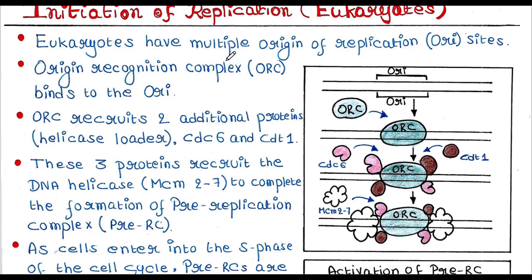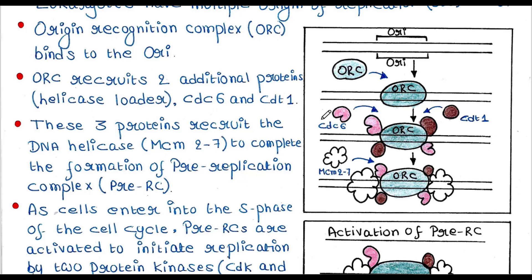Now origin recognition complex, or ORC, binds to this ori. ORC recruits two additional proteins: helicase loaders CDC6 and CDT1. These three proteins recruit the DNA helicase MCM2-7 to complete the formation of pre-replication complex, or pre-RC. So basically this MCM2-7 is the DNA helicase.